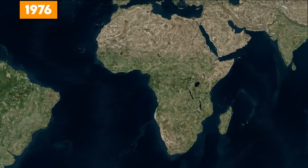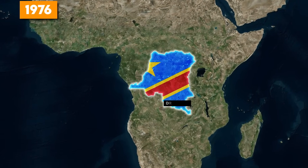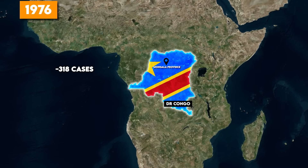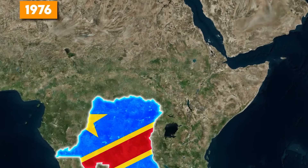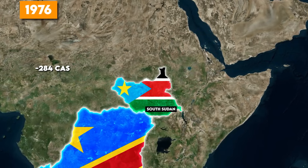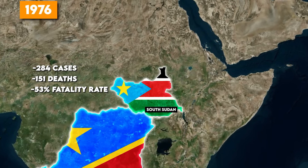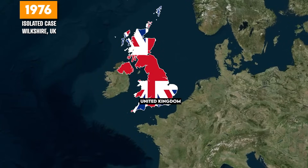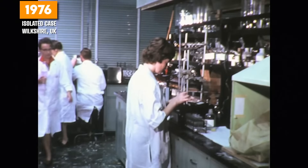1976 marked the first recognized outbreak of Ebola, occurring simultaneously in two regions. In the Democratic Republic of the Congo, the virus struck Magala province, with 318 cases and a devastating 280 deaths — an alarming fatality rate of 88%. That same year, South Sudan, specifically the Western Equatoria and Central Equatoria states, experienced an outbreak of the Sudan strain, with 284 cases and 151 fatalities — a 53% fatality rate. Also in 1976, an isolated laboratory-acquired infection of the Sudan strain occurred in Wilkeshire, England, with no fatalities.